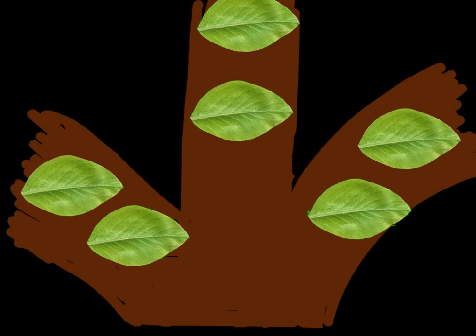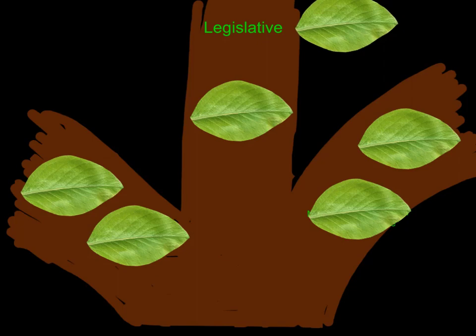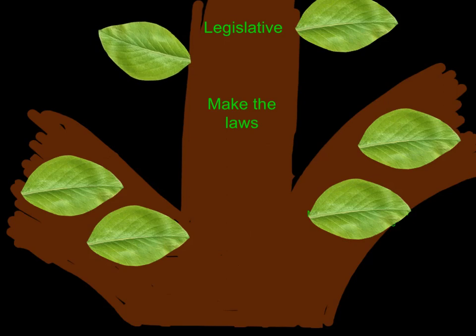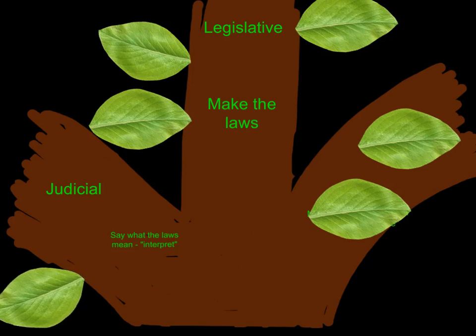Now we've zoomed in on our tree of government, and we're going to look at what the three branches of government are and what they do. First we have the legislative branch, and their main job is to make laws. The other two branches deal with those laws. The judicial branch is tasked with saying what those laws mean — they have to interpret the laws. So the legislative branch makes the laws, and it's the job of the judicial branch to tell us what those laws mean.